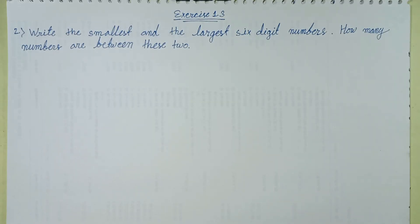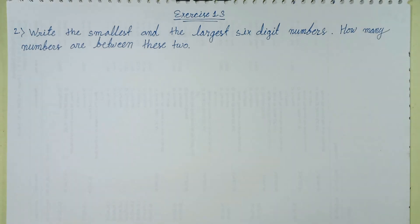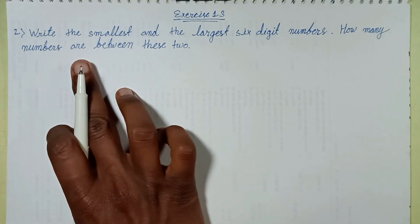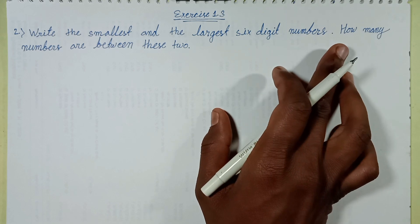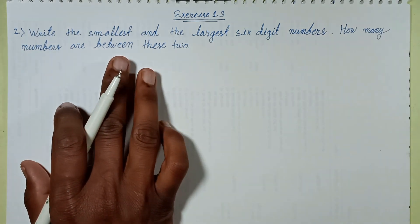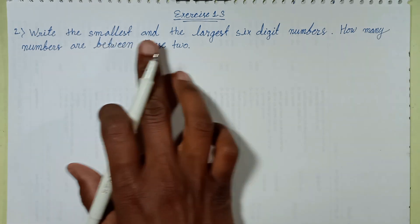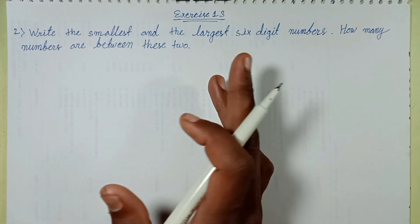Pande Matram everyone, welcome back to this episode. This episode discusses Exercise 1.3, Question Number 2, which belongs to Artisama Mathematics 4, Class 6. Let's solve it. This question asks: write the smallest and largest six-digit number, and how many numbers are between these two?